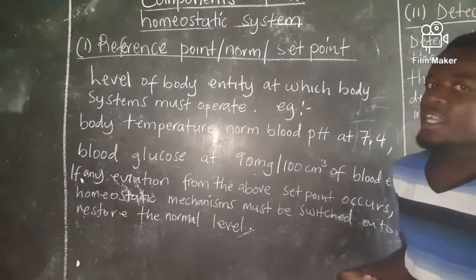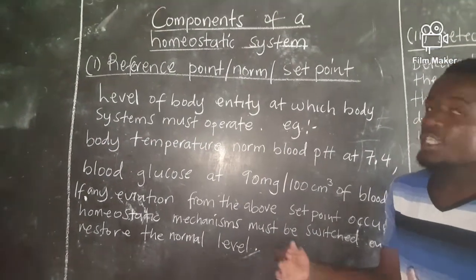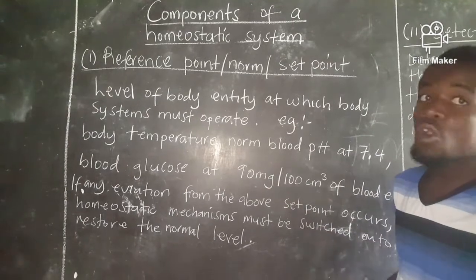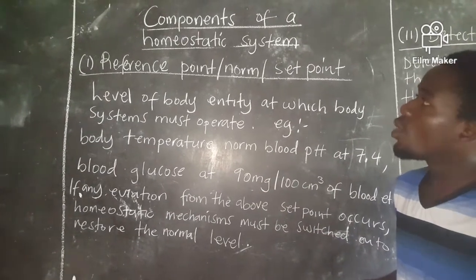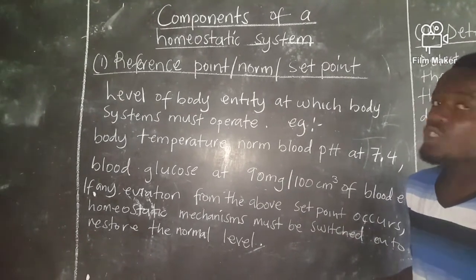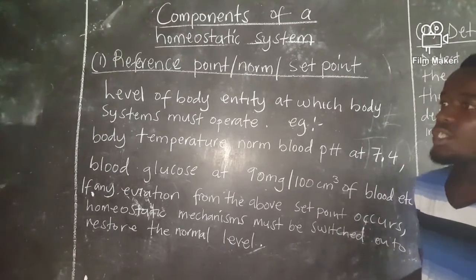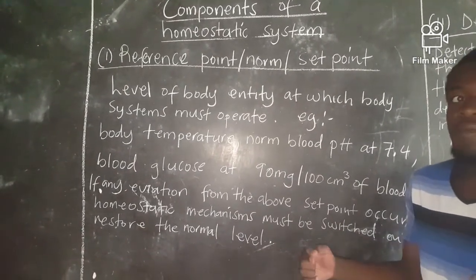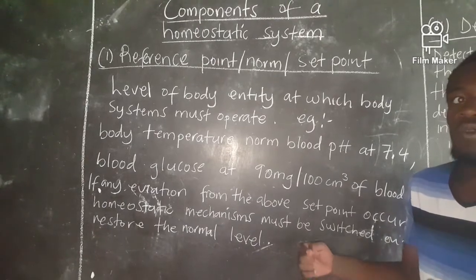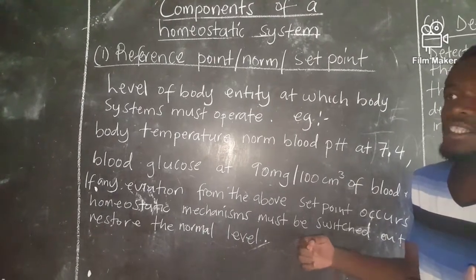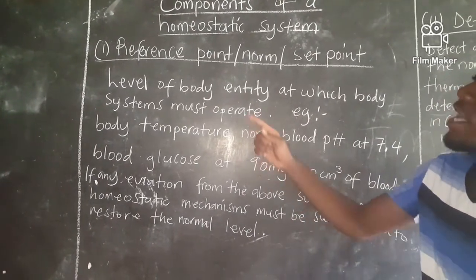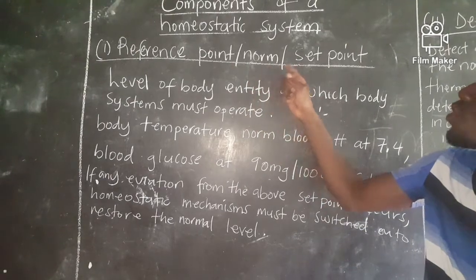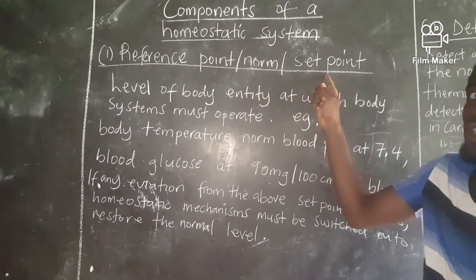We've been looking at homeostasis and today let's go on with the components of a homeostatic system — what makes up a good homeostatic system. Number one, we have the reference point, the norm, or the set point.